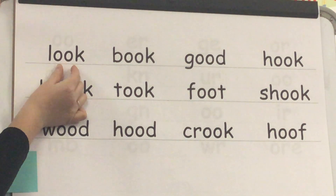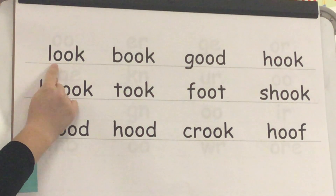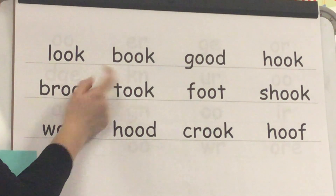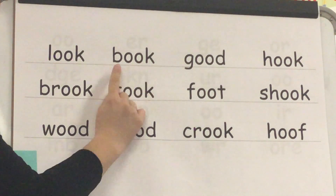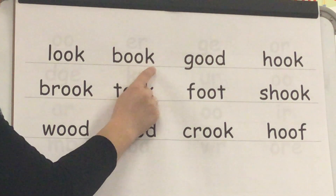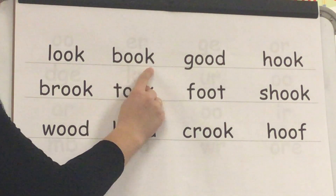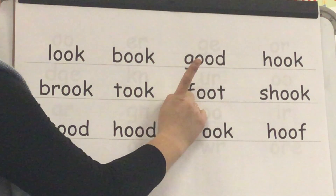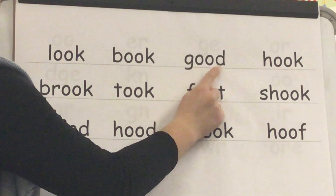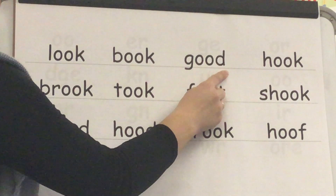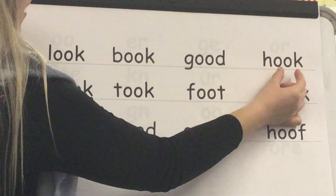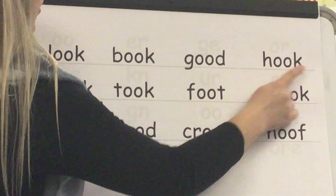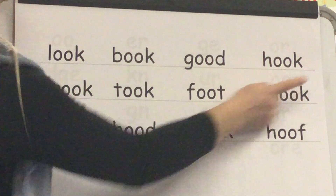Sound /uh/, blend L-OOK, word: look. Yes, look. Sound /uh/, blend B-OOK, word: book. Yes, book. Sound /uh/, blend G-U-D, word: good. Yes, good. Sound /uh/, blend H-OOK, word: hook. Yes, hook.